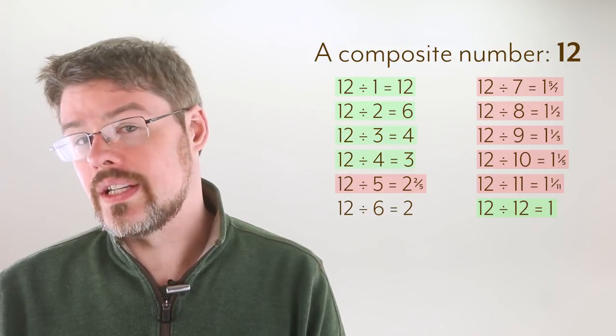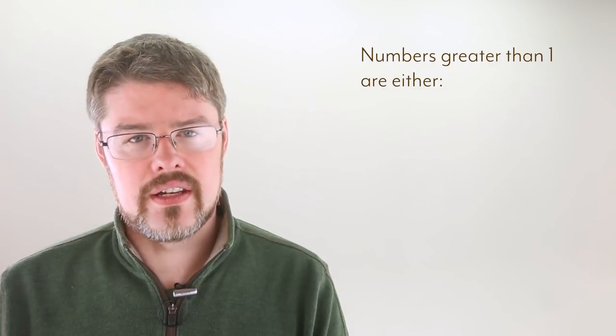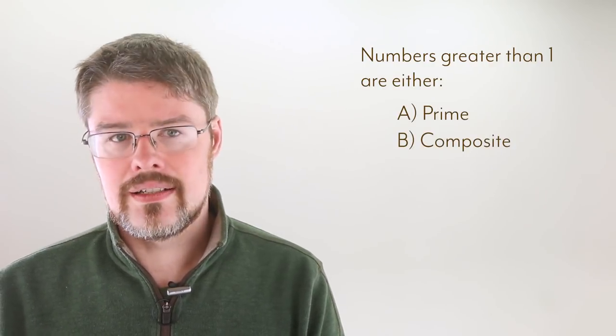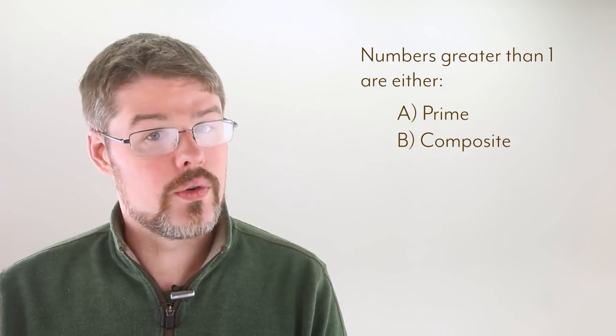2, 3, 4, and 6 to be precise. Numbers greater than 1 come in two flavors, then. Prime or composite. A number can't be both, and it must be one or the other.